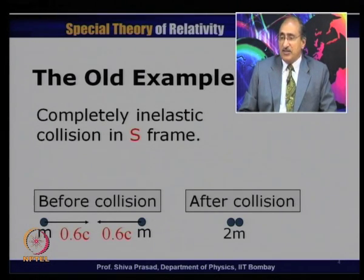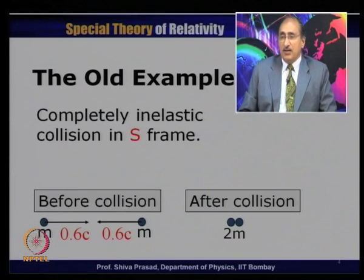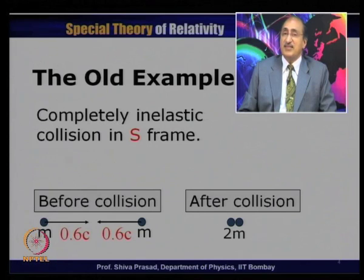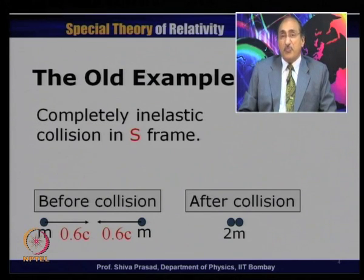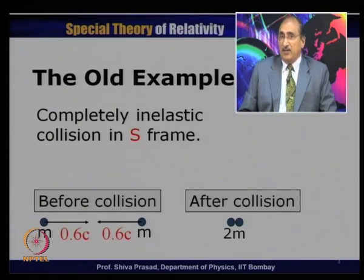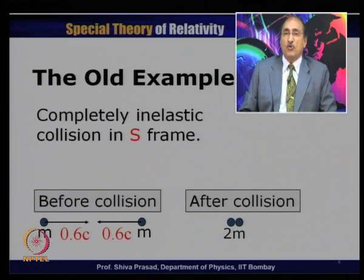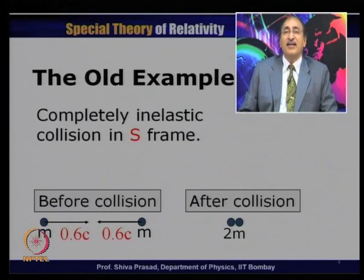We then transformed the frame of reference and went to the frame of the first particle — a frame moving with a speed of 0.6c along the plus x direction. We applied the velocity transformation derived from the Lorentz transformation to find the speeds of these particles in that frame, which we called S'. We found that momentum was not conserved in S'. That is where we concluded that momentum needs to be redefined. Now let us look at this problem again in the light of the new information we have regarding momentum and energy.